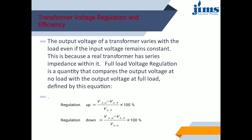The way in which the secondary terminal voltage varies with the load depends upon load current, the internal impedance, and the load power factor. The change in secondary terminal voltage from no load to full load, with primary voltage and frequency held constant, is termed the inherent regulation. The output voltage of a transformer varies with the load even if the input voltage remains constant, because a real transformer has series impedance within it. Full load voltage regulation is a quantity that compares the output voltage at no load with the output voltage at full load.